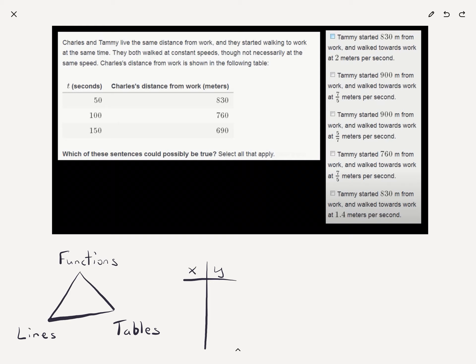They also both walk at constant speeds, which is extraordinarily unlikely for both Charles and Tammy, unless they have exactly the same shoe size. Anyways, moving on. They both walk at constant speeds, though not necessarily at—oh, I read it wrong. They both walk at constant speeds, but not necessarily at the same speed. Okay? That's going to be important. So their speed is constant, but it might be different for Charles than it is for Tammy. Charles' distance from work is shown on the following table. All right?